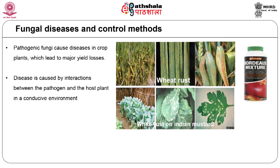Fungi are the most important pathogens causing major yield losses in cereals, pulses, oil seed crops, vegetable and fruit crops, resulting in severe yield losses both in quantity and quality. The Food and Agricultural Organization (FAO) has estimated that each year 25 percent of the world's crops are affected by fungal pathogens, with an annual loss of about 1 billion metric tons of food and food products. It is of utmost importance to the farming community to mitigate fungal diseases in order to reduce yield losses in the field and also during post-harvest.